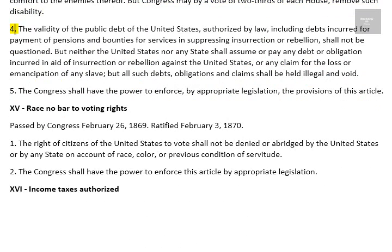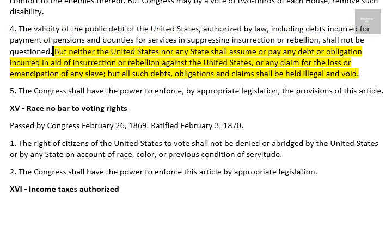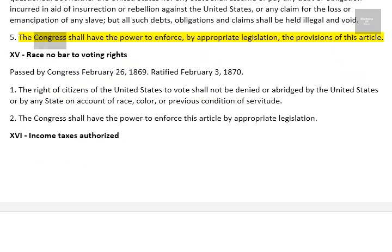4. The validity of the public debt of the United States, authorized by law, including debts incurred for payment of pensions and bounties for services in suppressing insurrection or rebellion, shall not be questioned. But neither the United States nor any state shall assume or pay any debt or obligation incurred in aid of insurrection or rebellion against the United States, or any claim for the loss or emancipation of any slave. But all such debts, obligations and claims shall be held illegal and void. 5. The Congress shall have the power to enforce, by appropriate legislation, the provisions of this article.